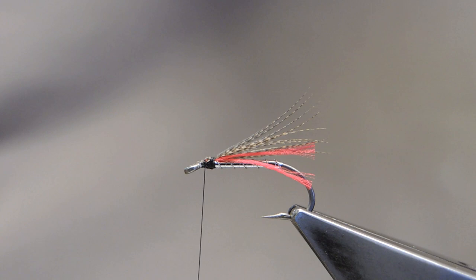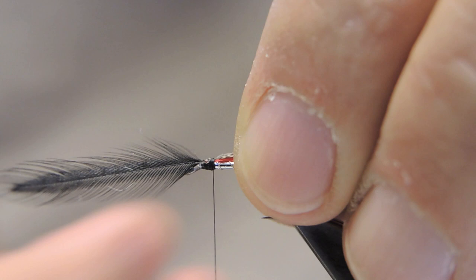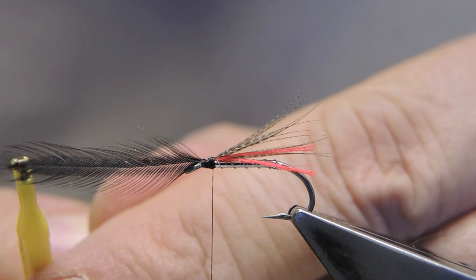Next, a black hen hackle is tied in. Get rid of the stub and clip on some hackle pliers.